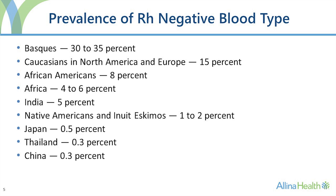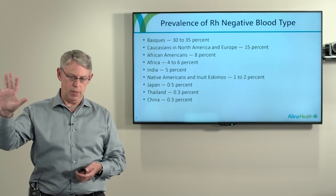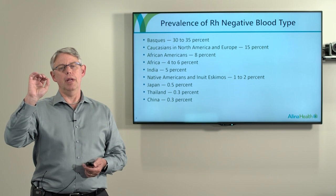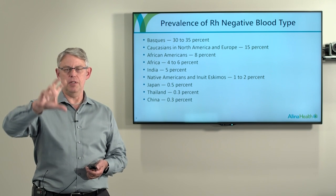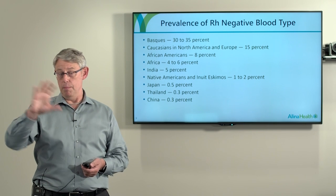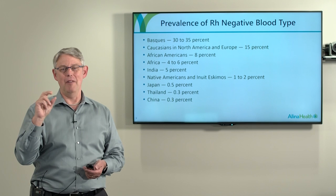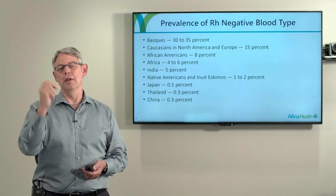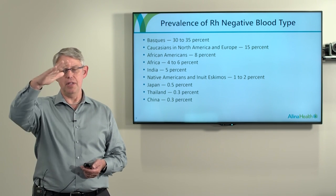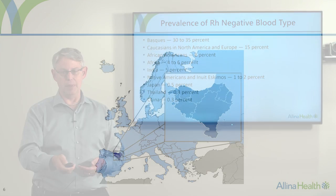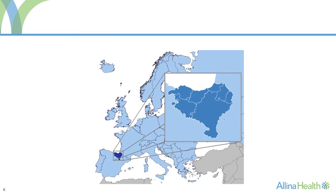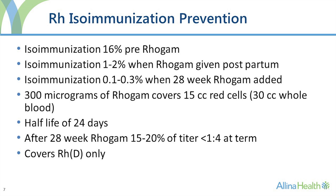Even though RH used to be the most common type of isoimmunization, it's becoming less and less common because of preventative measures. As you probably know, there's a difference in gene frequency between various parts of the world, with the greatest being in Basques — about a third of people of Basque origin are RH negative. The Basque region is in northern Spain and southern France. So historically, the most common type of isoimmunization was RH big D.